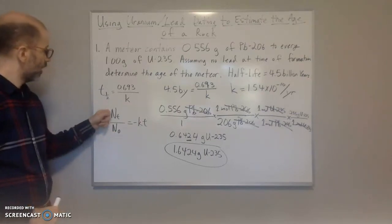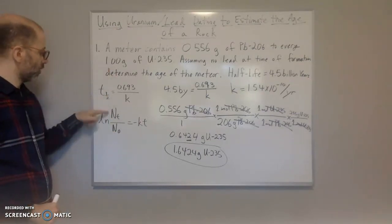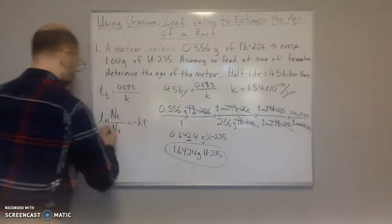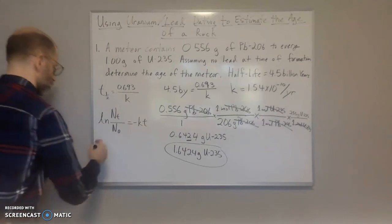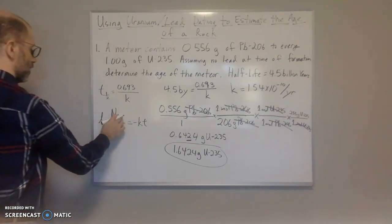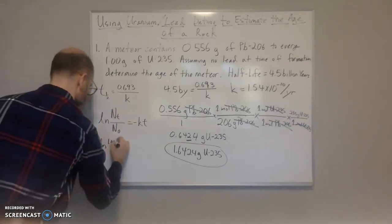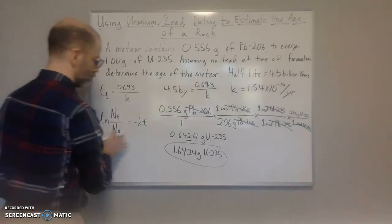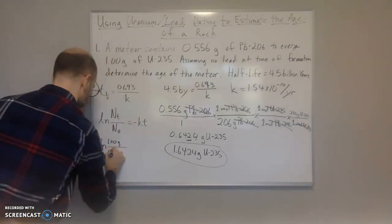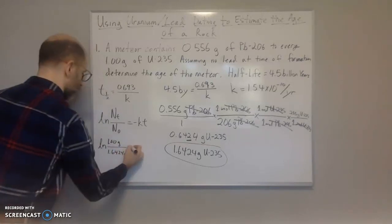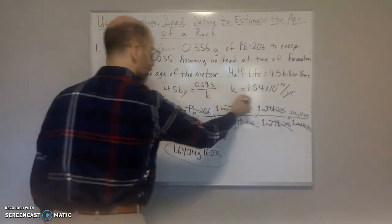And so our actual amount here, the 1 gram plus this gives us 1.6424 grams uranium-235. That's what we started with. So that's our initial amount. And now we have our actual amount at time t. This is what we have left.